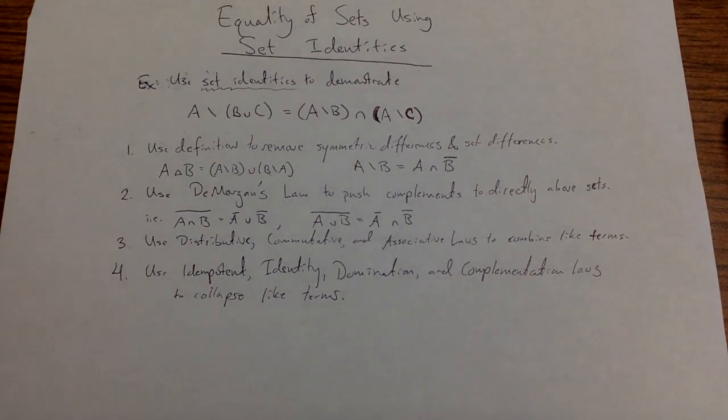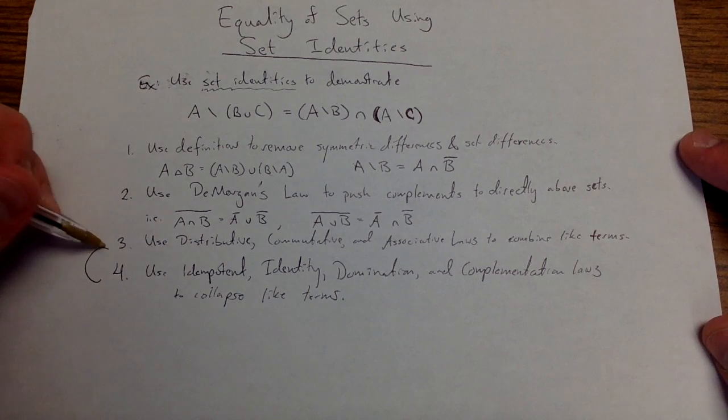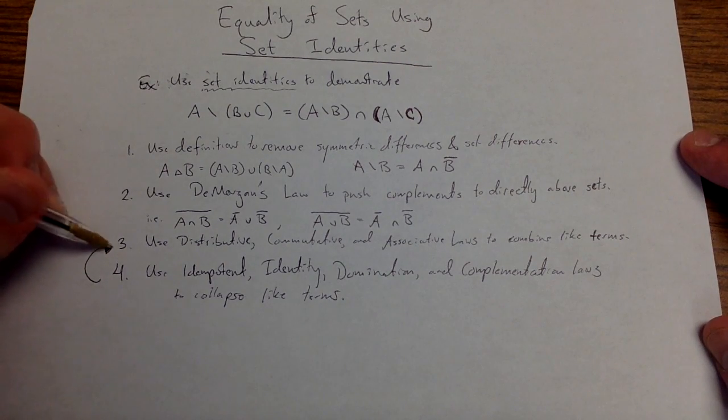Then finally, I'm going to use idempotent identity domination and complication laws to collapse like terms. If at all possible, I might need to repeat steps three and four until I feel like I've gotten to a simple level.